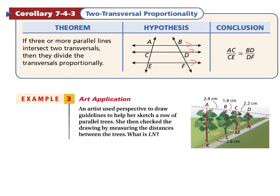Here's example 3. An artist used perspective to draw guidelines to help her sketch a row of parallel trees. She then checked the drawings by measuring the distance between the trees. What is the length of LN? We want to know this length right here from L to N.